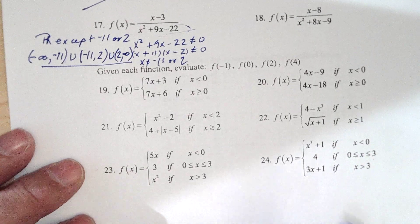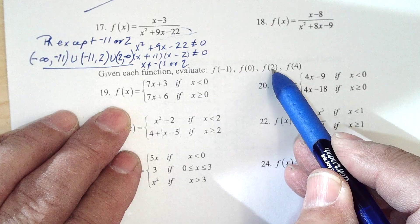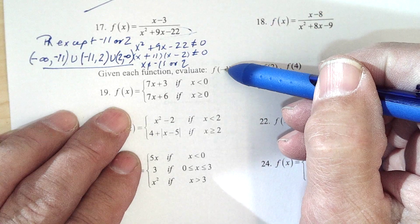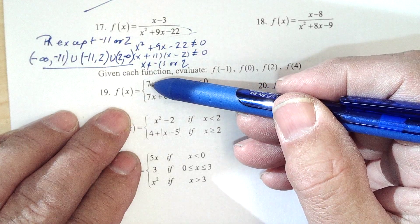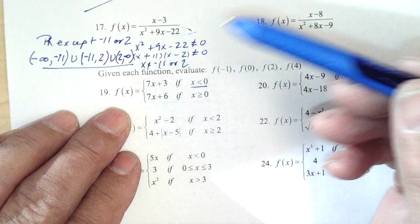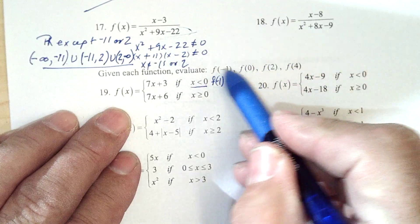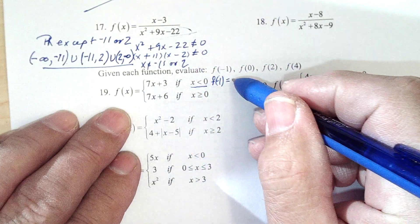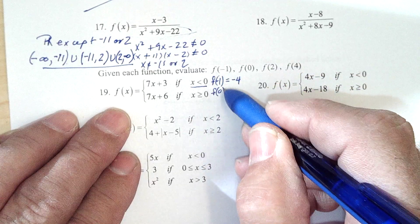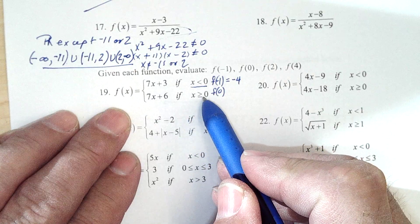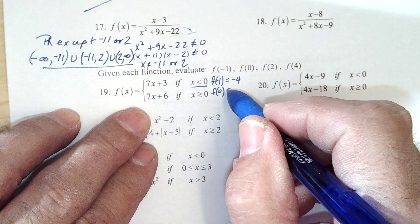All right. On 19, we're supposed to evaluate f of minus 1, 0, 2, and 4. Well, negative 1 is in this window, so we'd use negative 1 in here, and we'd get f of negative 1 would be negative 7 plus 3 is negative 4. f of 0, 0 is in this window, so we use this equation, 7 times 0 plus 6 is 6.